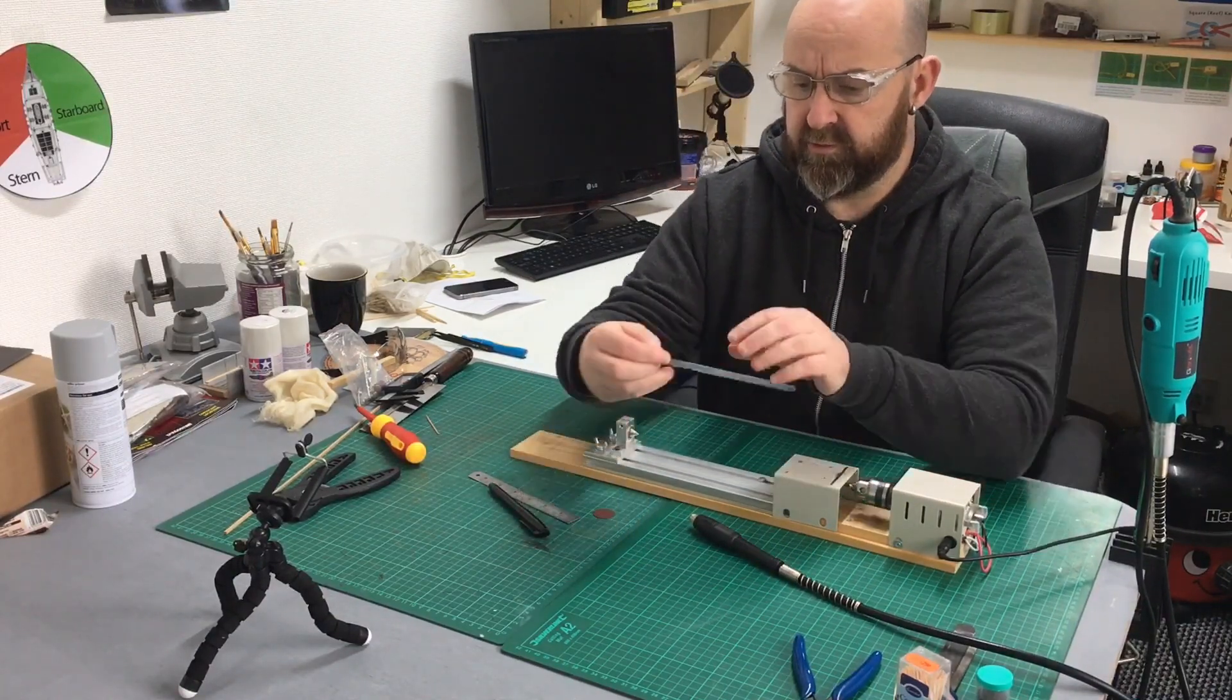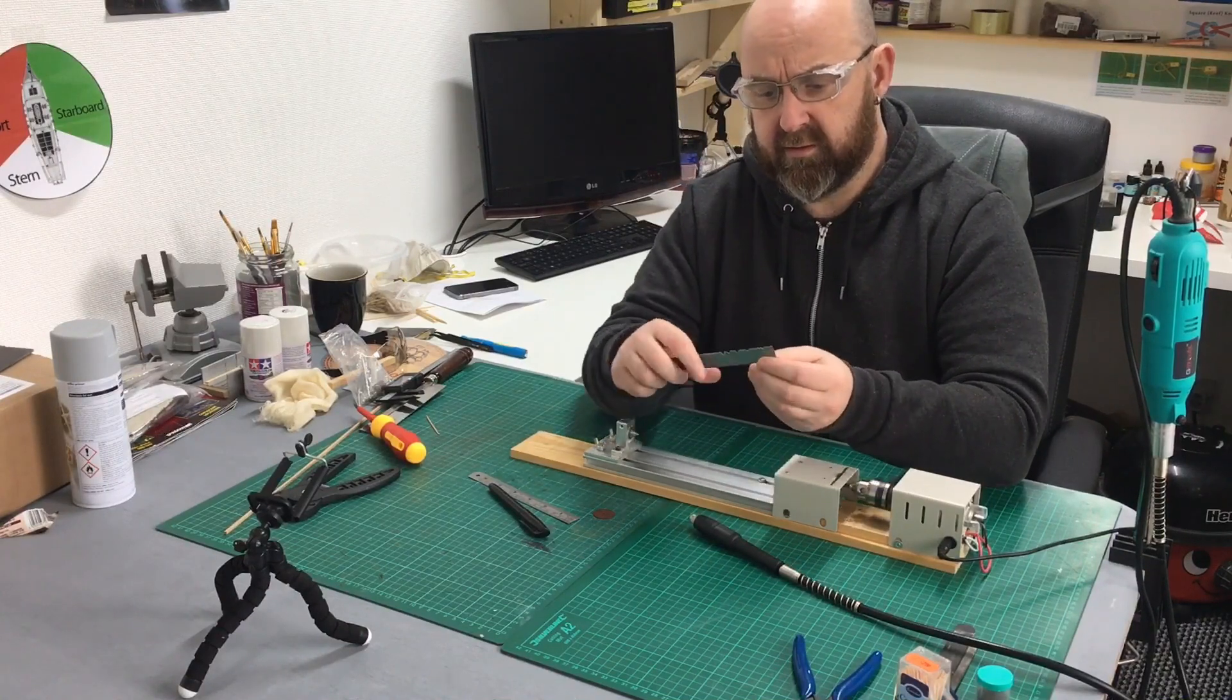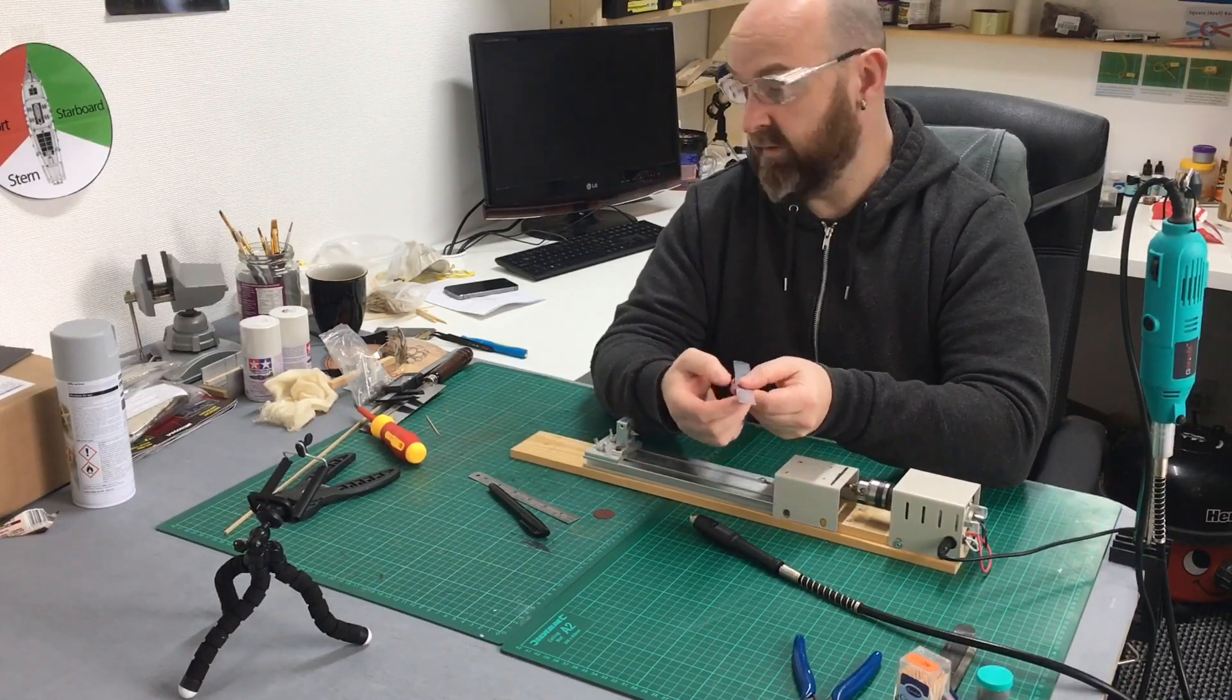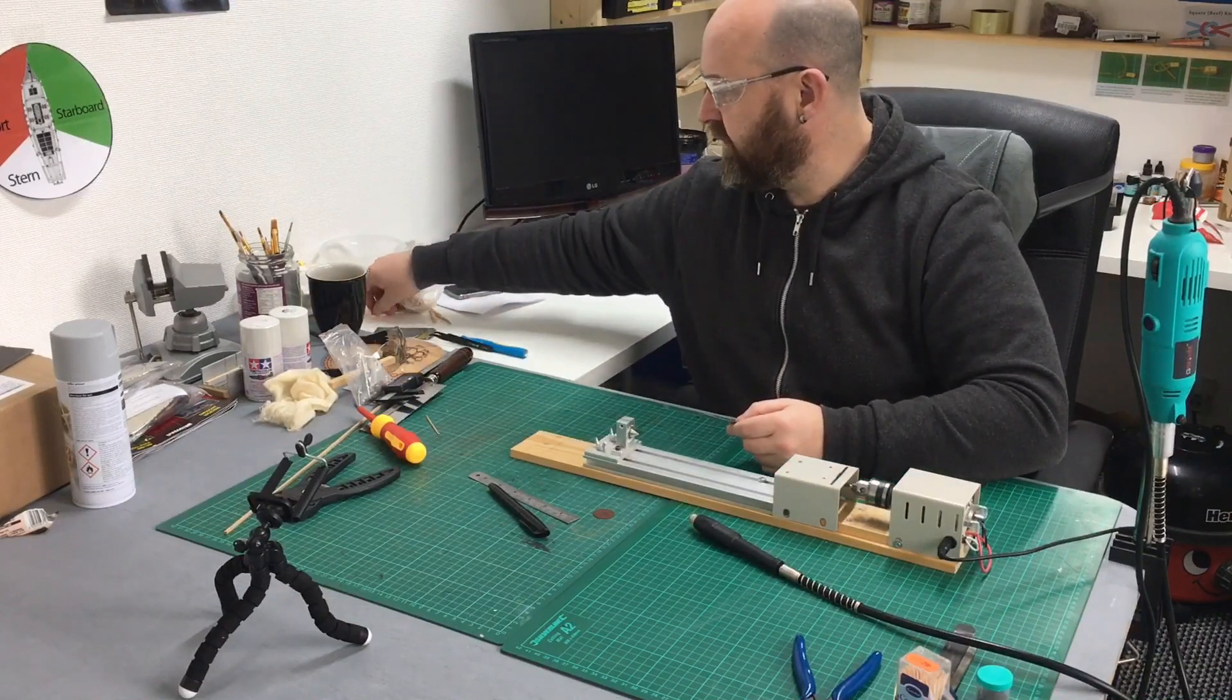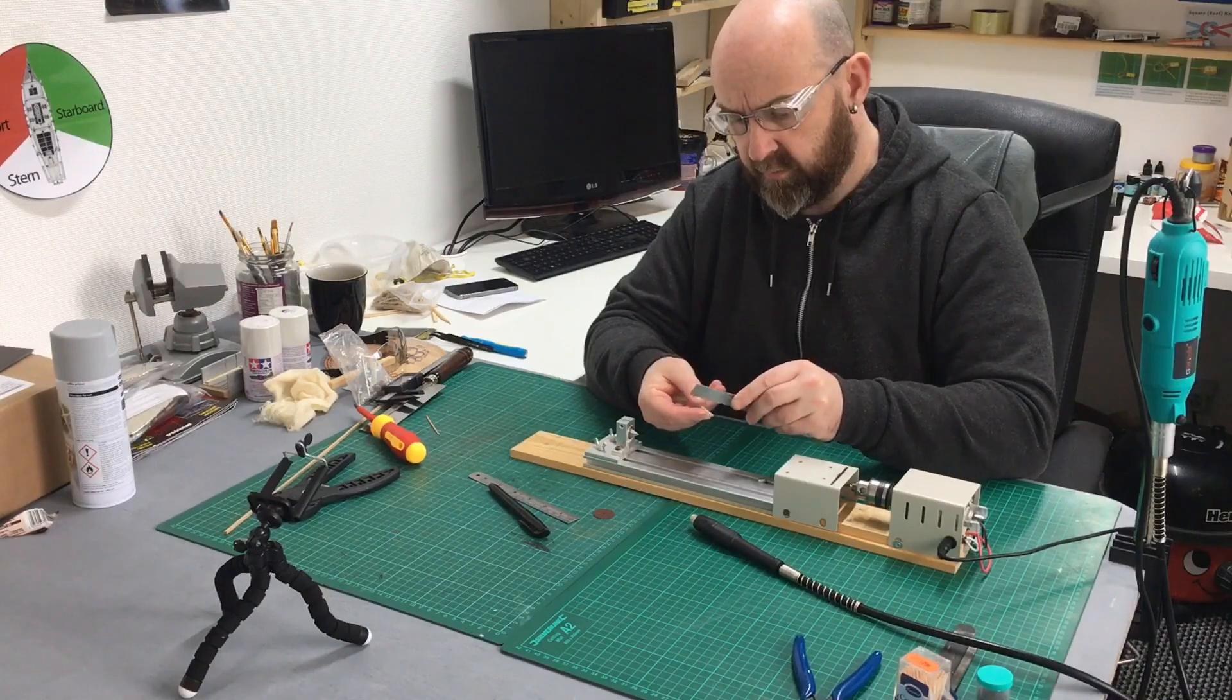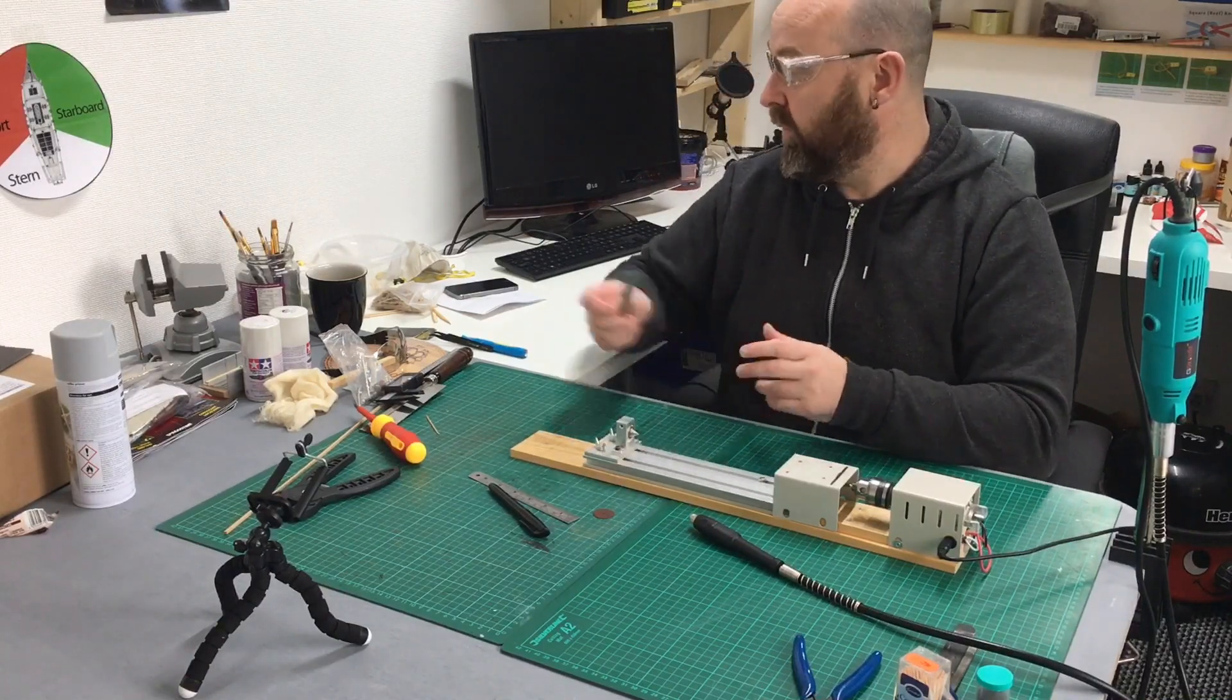When I first did it I just used this little ruler and I cut loads of little different variations of mouldings. It's pretty much just a case that I use it to scrape, obviously like a scraper down the wood and it forms a moulding.